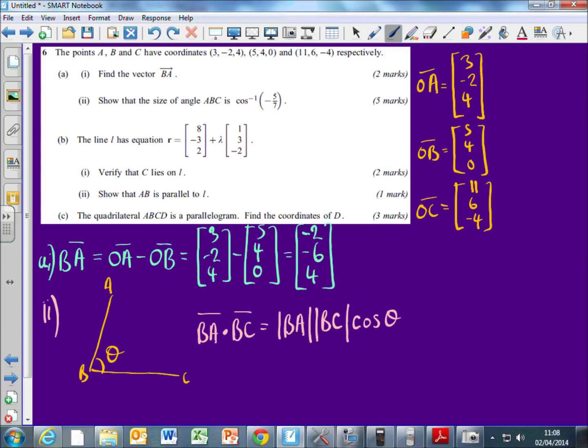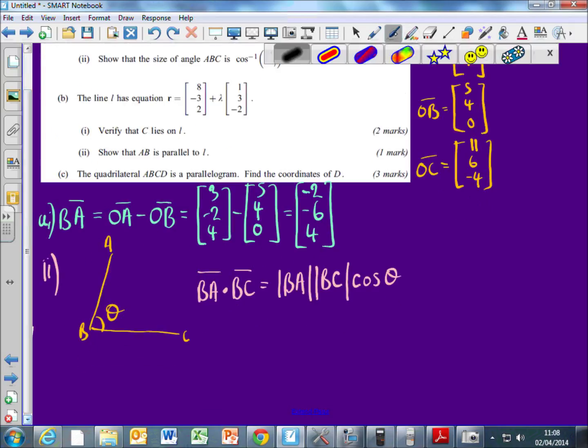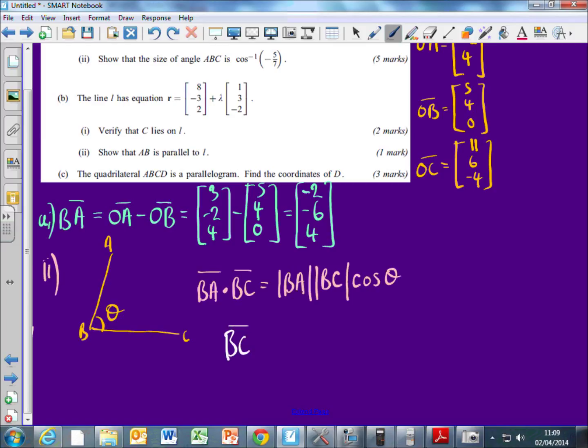So we've got B to A already, so we're just going to have to find out what B to C is. So if you could find B to A, I guess we can find B to C. So how do I work it out? So it's C minus B. O to C, take away O to B. And you get 6, 2, minus 4. 11 minus 5 is going to be 6, and then 6 take away 4 is 2, and 0, so it's minus 4 there. Are you happy with that?